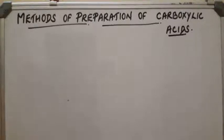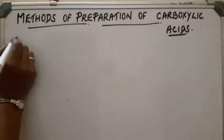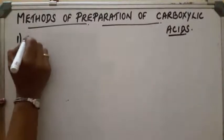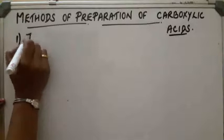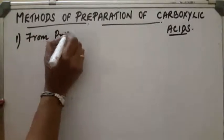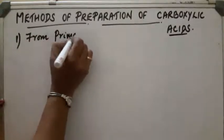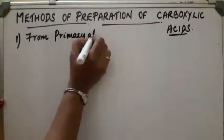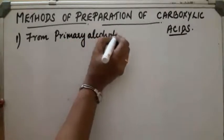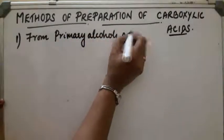Methods of preparation of carboxylic acids. First method: from primary alcohols and aldehydes.